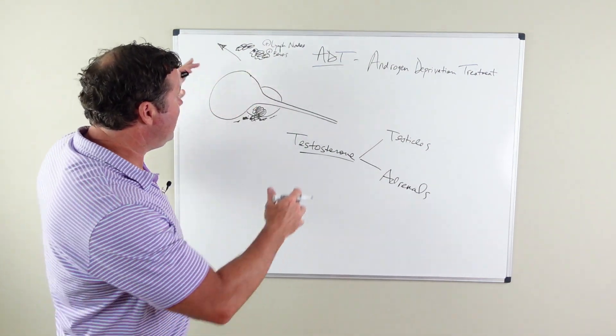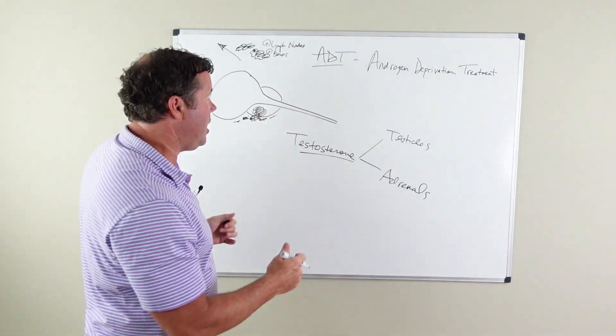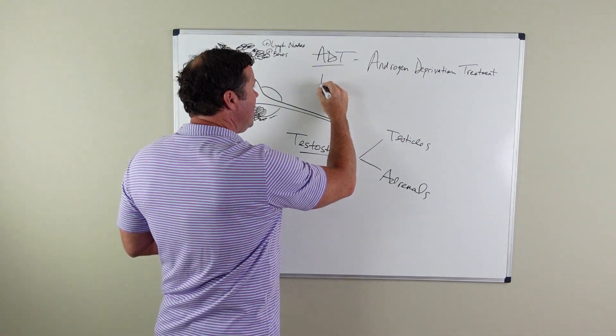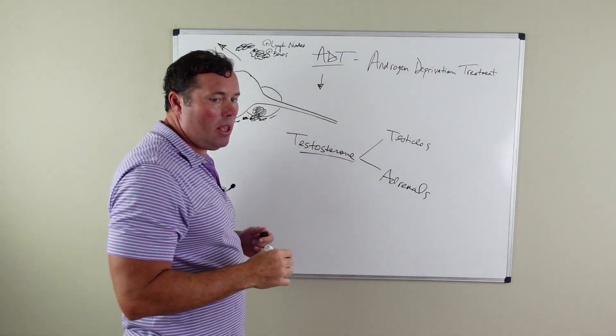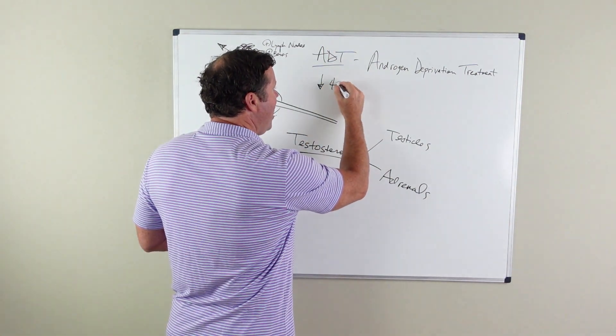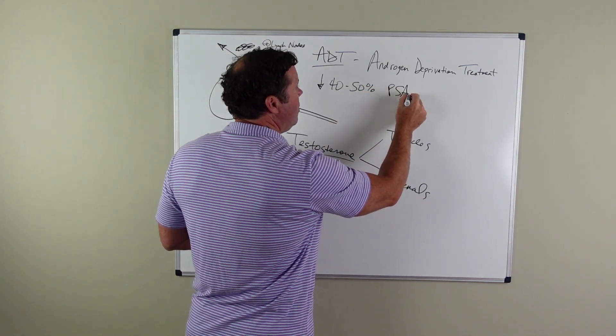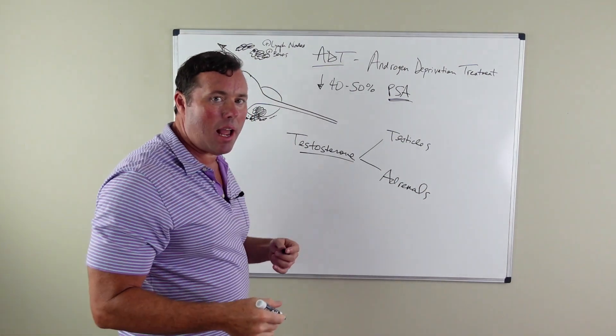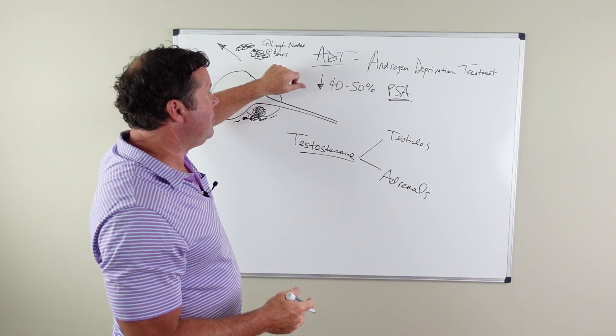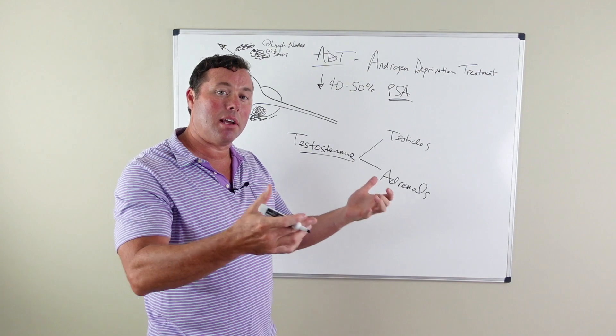In a patient that has high PSA, advanced prostate cancer, metastatic prostate cancer, in someone that undergoes ADT, you should see a dramatic improvement in your PSA just simply being put on this ADT. You should see anywhere from a 40 to 50% decrease in your PSA, and that's a good sign that tells you that your cancer is likely responding to this low testosterone environment.